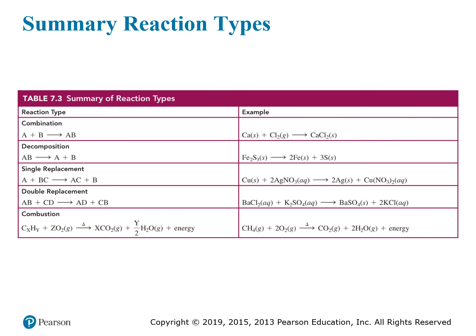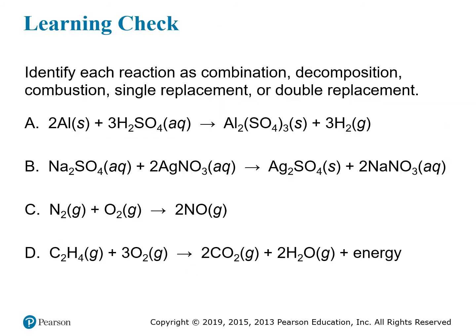This chart summarizes the reaction types with generic formulas and examples. For combustion, the generic form changes because it specifically requires oxygen as a reactant and produces CO2 and H2O. Now, to identify reaction types by example: two aluminum reacting with three sulfuric acid produces aluminum sulfate and hydrogen gas. You have an element (aluminum) and a compound (sulfuric acid) — aluminum replaces hydrogen, which ends up on its own. This is a single replacement reaction.